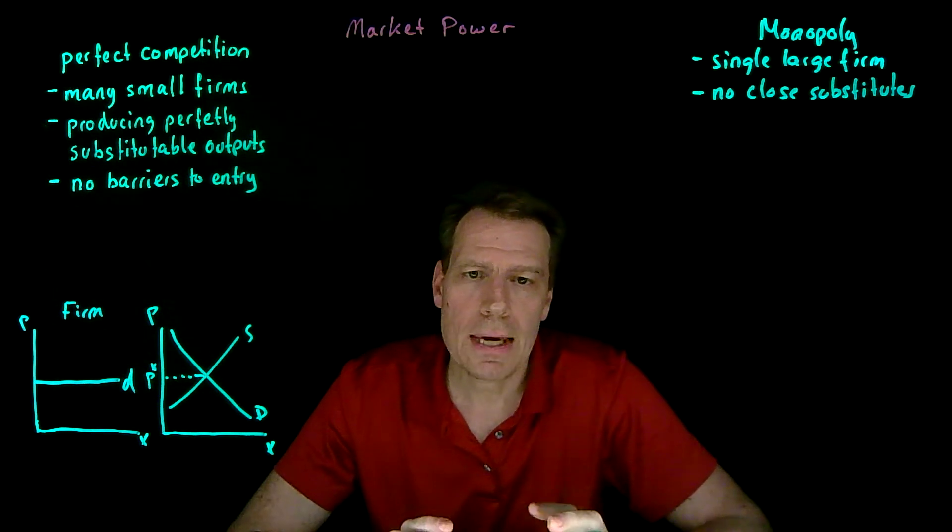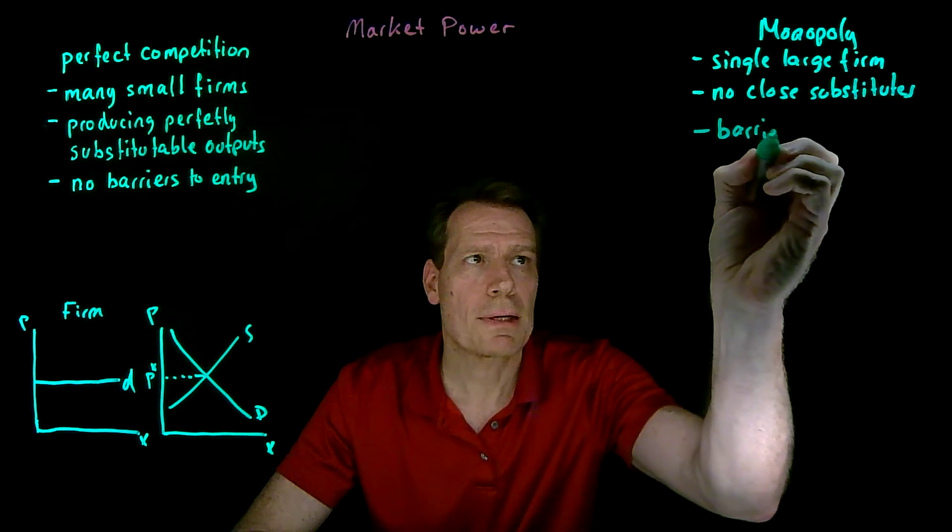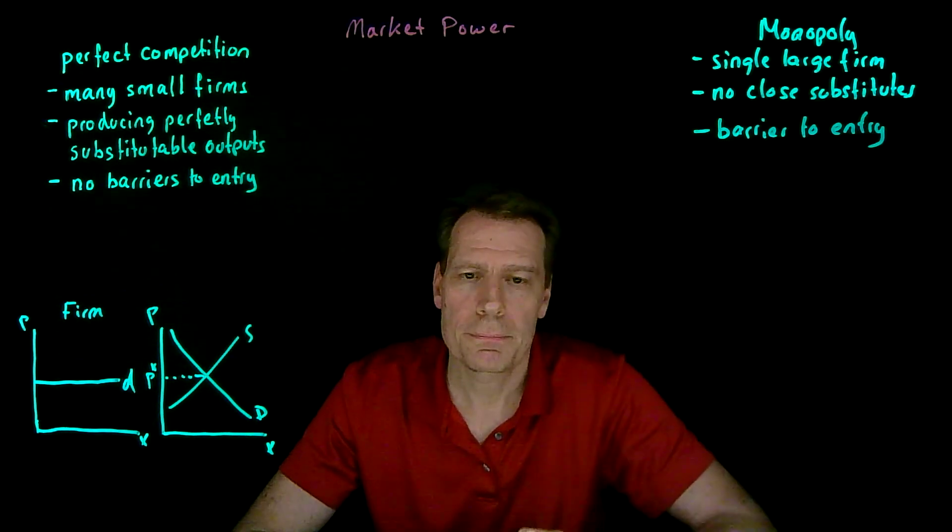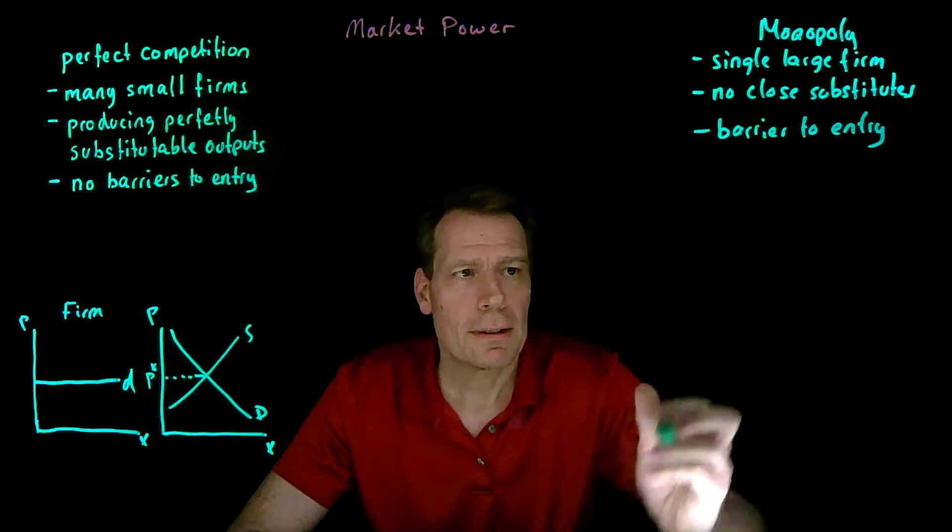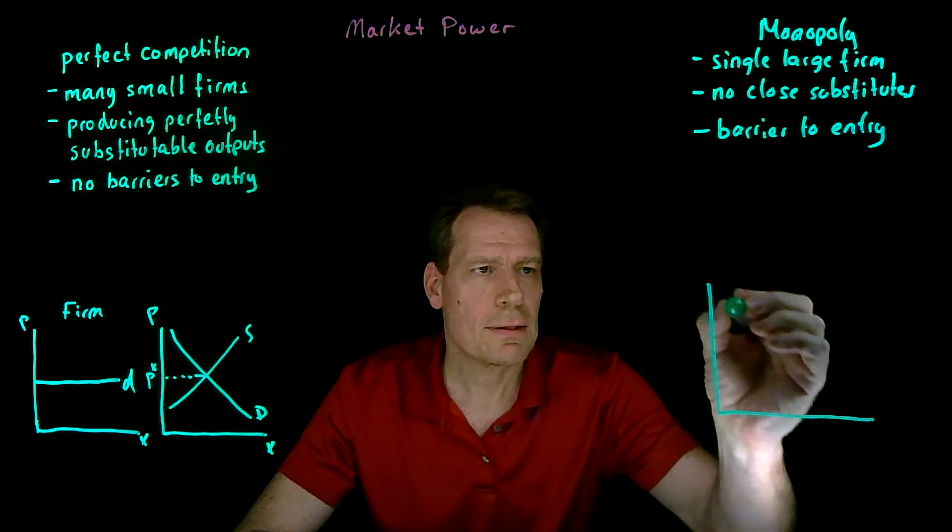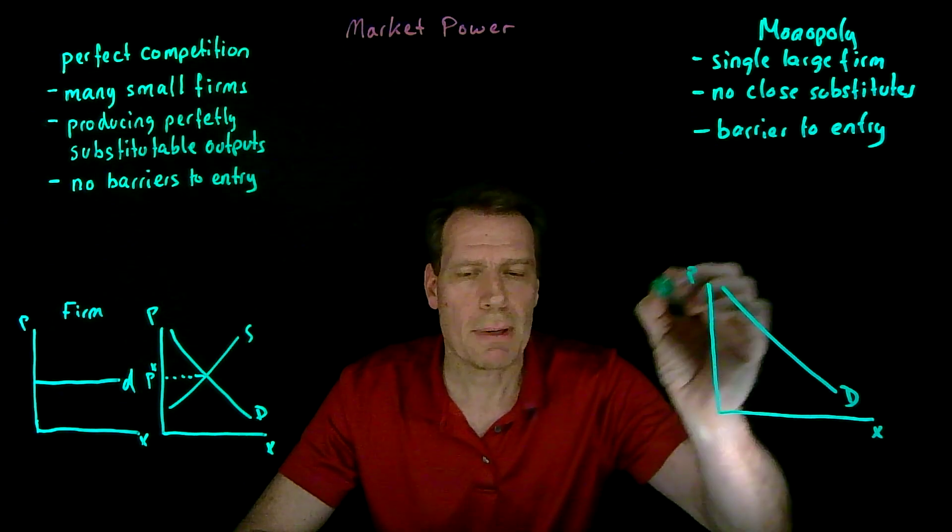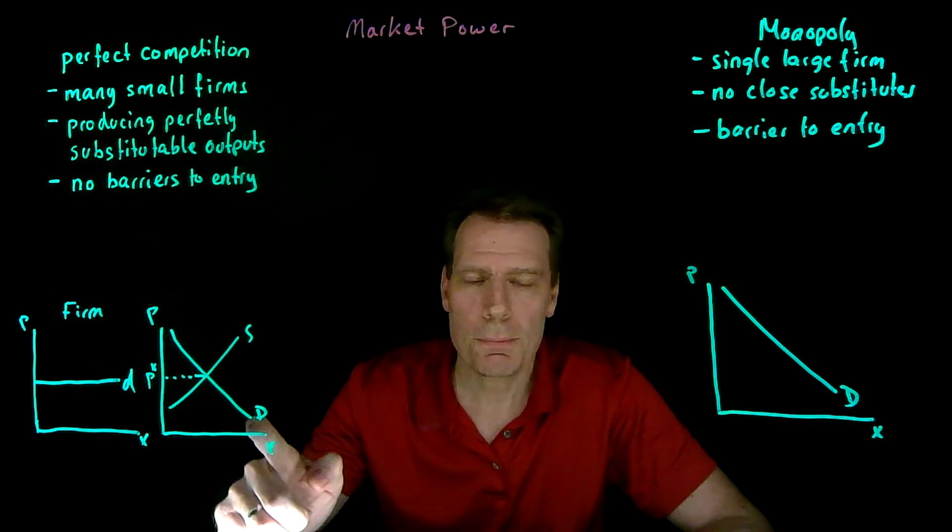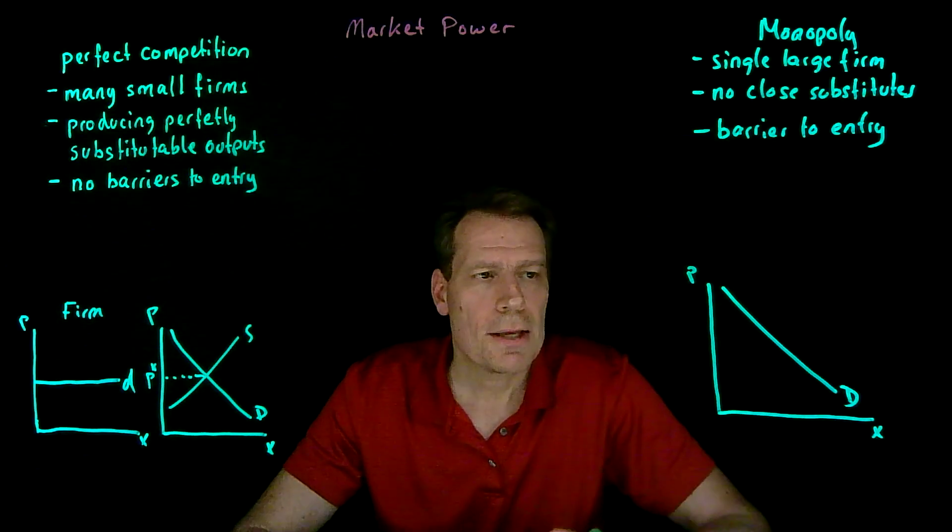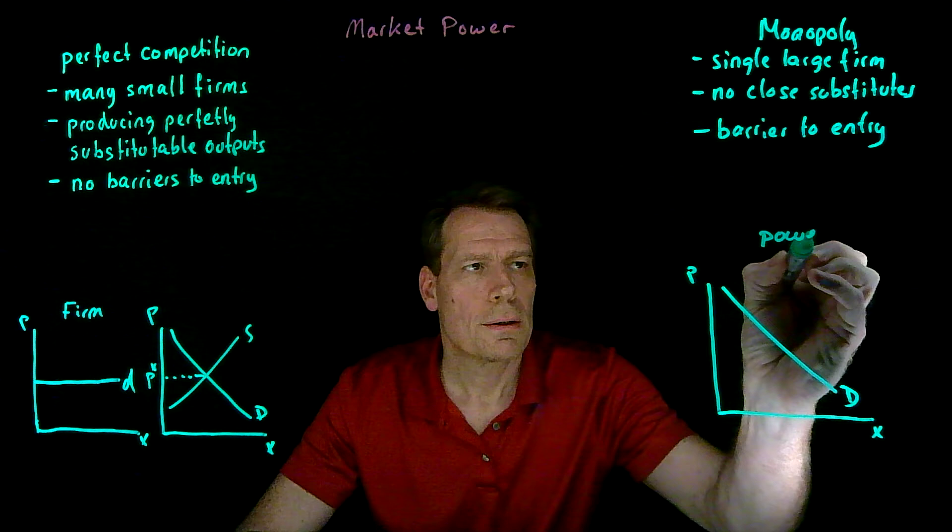Finally, that firm is protected by some barrier to entry, keeping other firms from entering that market and competing. When you have a monopoly, that monopoly gets the entire demand curve for the market. The market demand curve becomes that firm's demand curve. We have the same downward sloping market demand curve, but now that is the firm's demand curve, and so the firm has the power to set price.